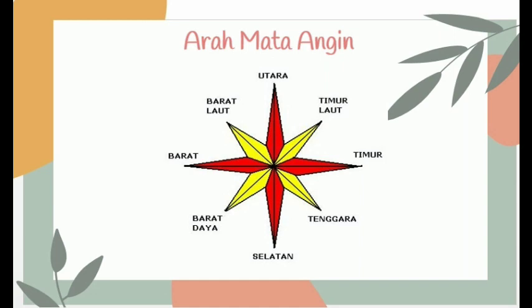Tetapi yang sering digunakan untuk sehari-harinya kita menggunakan empat arah mata angin, yaitu utara, timur, selatan, dan barat. Itu yang sering digunakan setiap hari. Jika teman-teman melihat di peta, ada arah yang menunjukkan angka U dan S, itu tandanya adalah utara dan selatan. Yang atas itu utara, yang bawah itu selatan, dan timur di samping dan juga barat. Untuk memudahkan teman-teman menghafal arah mata angin, kita simak nyanyian berikut ini.